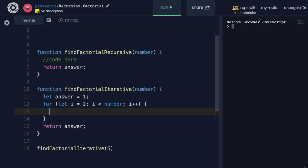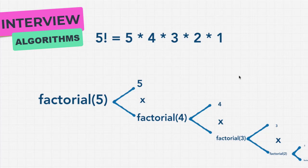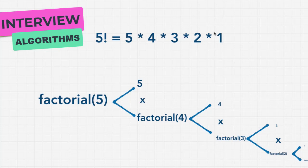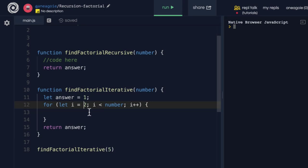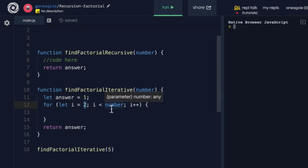Now why are we starting at 2? You might notice a shortcut here: 1 factorial is just 1, and 2 factorial is 2 times 1, which is just 2. So if somebody says 1 factorial or 2 factorial, we can simply return the number they've entered because there's no real calculation we need to do. This avoids extra loops.